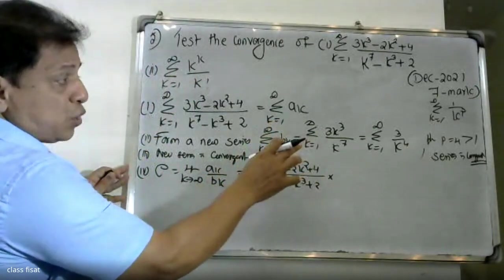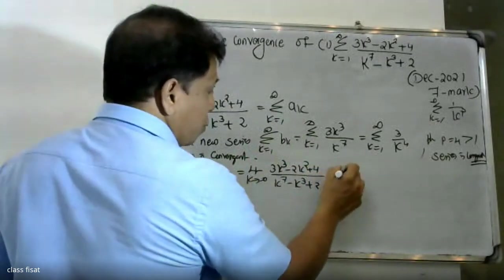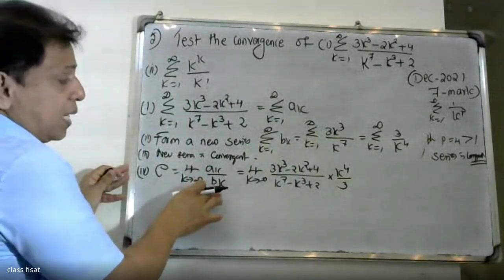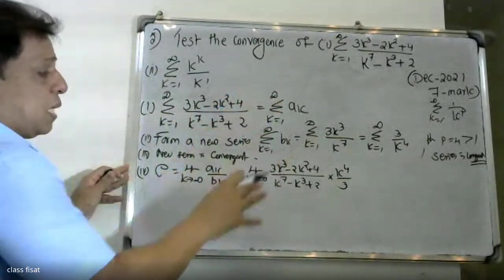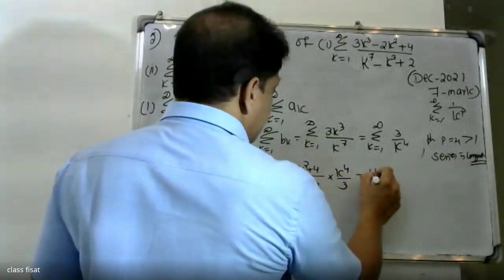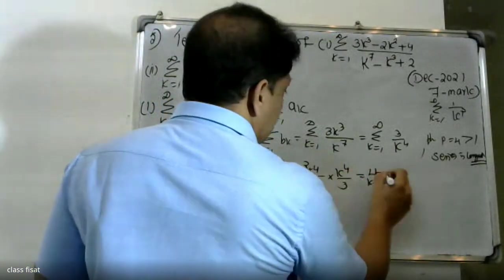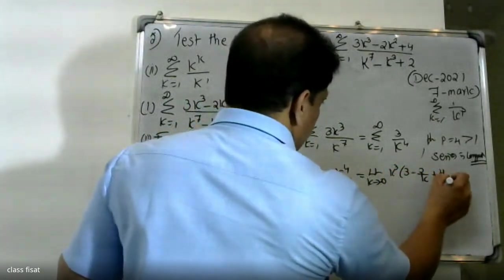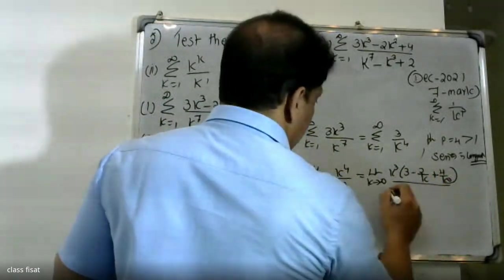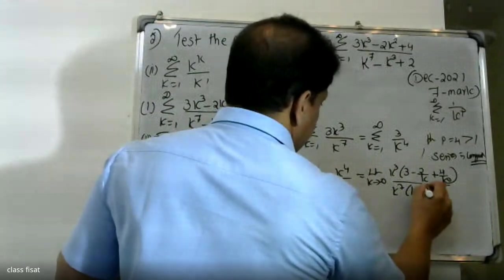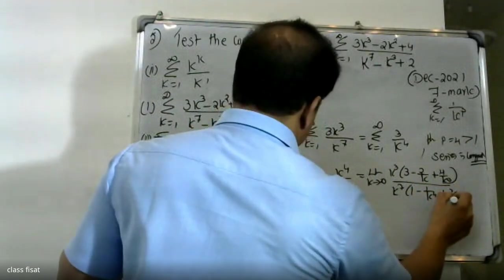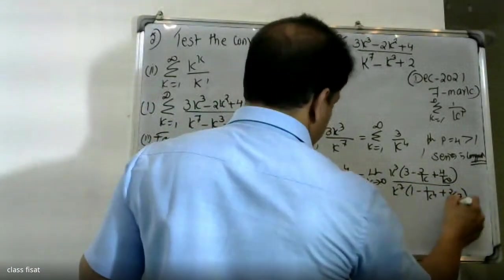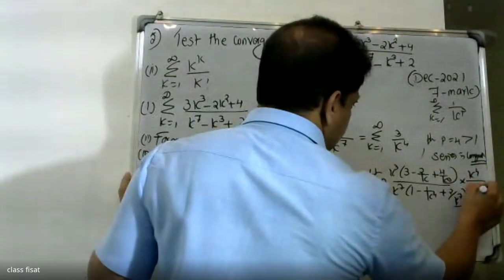We choose bₖ equal to 3 divided by k raised to 4. Then aₖ divided by bₖ equals (3k³ - 2k² + 4)/(k⁷ - k³ + 2) multiplied by k⁴ divided by 3. This simplifies with k⁷ in the denominator as 1 minus 1/k⁴ plus 2/k⁷.